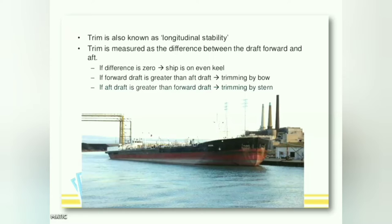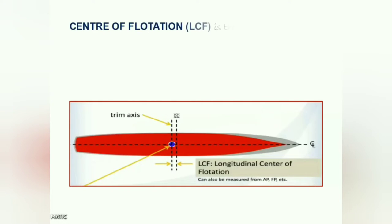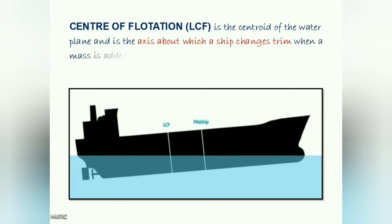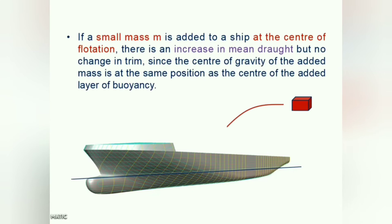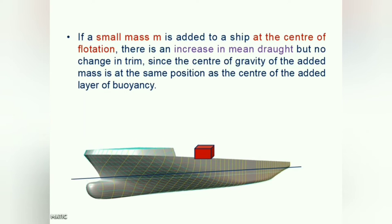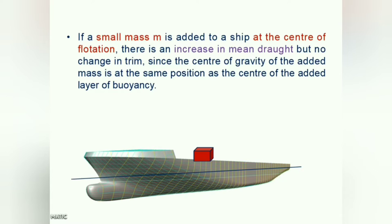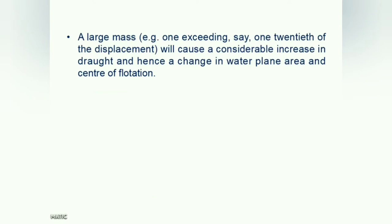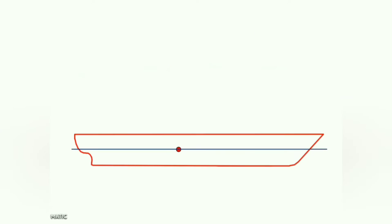Before proceeding ahead deep into the concept, we will have a look at some basic relevant terms. Center of floatation is simply the centroid of the load waterplane, and it is the axis about which a ship changes its trim. If a small mass is added to a ship at the center of floatation, the ship will only acquire a parallel sinkage down in the water with no change in trim. Addition of any mass forward or aft of center of floatation will cause the ship to change its trim along with a parallel sinkage.